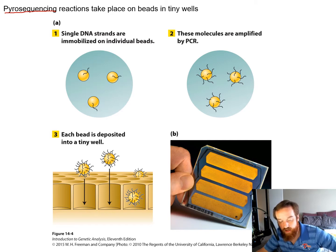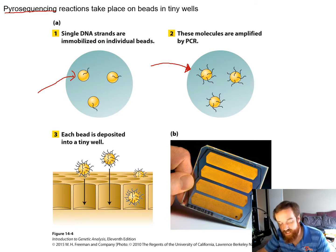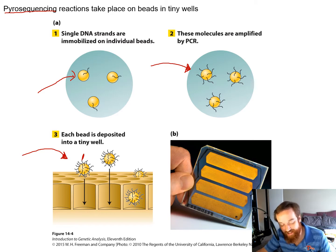In pyrosequencing, single strands of template DNA are attached to little beads. That DNA is then amplified by PCR and re-adhered to the same bead, so we end up with many copies of the exact same sequence on each bead. Each bead is placed into an individual well on a sequencing chip. The sequences on bead one are all identical, but distinct from those on beads two, three, or four — so each well tells us something different.